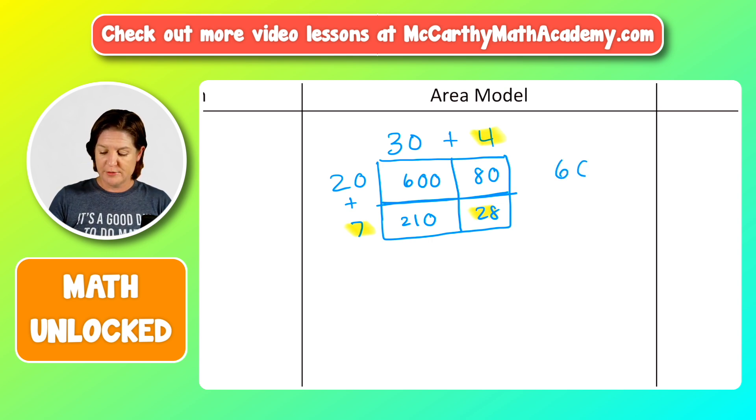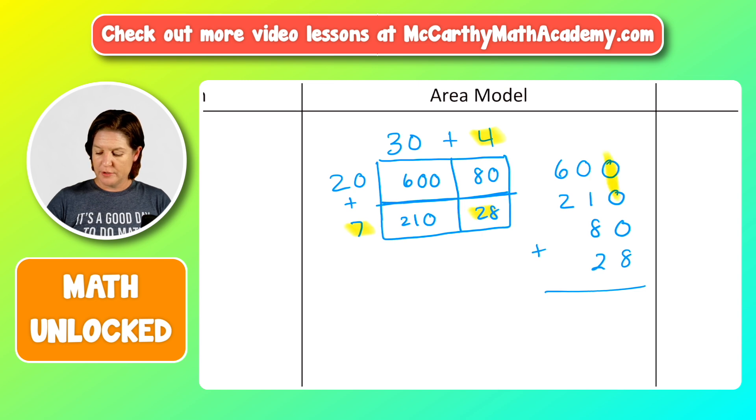So we have 600 plus 210 plus 80 plus 28. Zero plus zero plus zero plus eight would be eight ones. And the tens place, we have one 10, eight tens, two tens, and that would be 11 tens. So woo, it's high up here. Nice landing, dude. Then we have 100 plus 600 is 700 plus 200 would be 900. 900. And now we have our final product there.